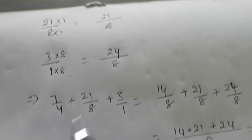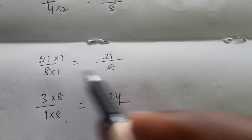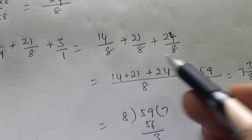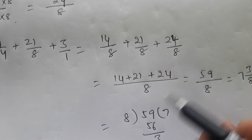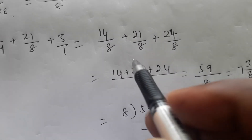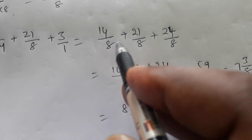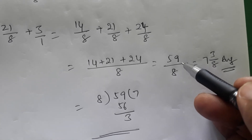Now add all the like fractions. The denominator repeats as it is, and the numerators are added: 14 + 21 + 24 = 59. So the answer is 59/8. This is an improper fraction — the answer should not be left as an improper fraction. Divide 59 by 8: 8 × 7 = 56, remainder is 3.